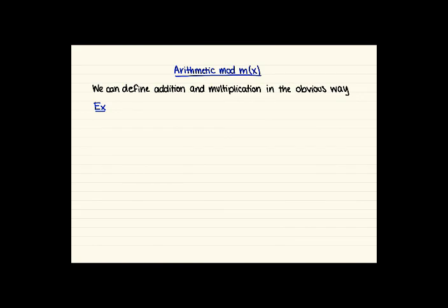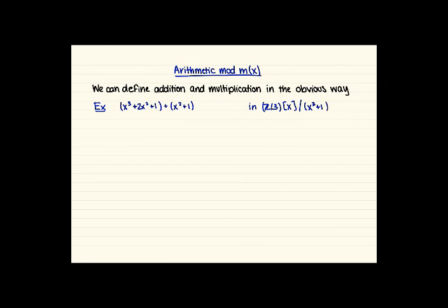For arithmetic mod m(x), we define addition and multiplication in the obvious way — we can either reduce and then add or multiply, or add or multiply and then reduce, similar to modular arithmetic for integers. For example: (x cubed plus 2x squared plus 1) plus (x squared plus 1) in Z mod 3 adjoin x mod (x cubed plus 1). Adding gives x cubed plus 3x squared plus 2, but 3x squared is 0 in Z mod 3, so we get x cubed plus 2. Reducing mod x cubed plus 1 gives remainder 1.